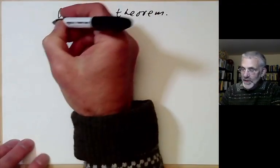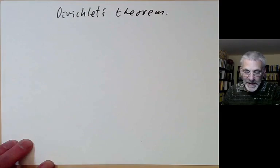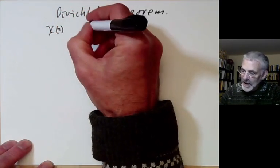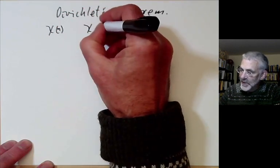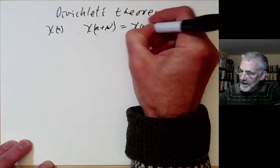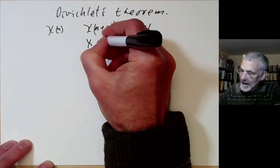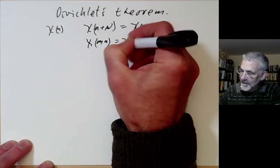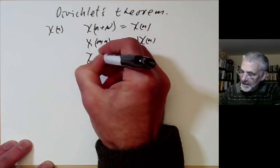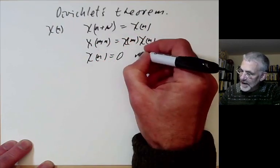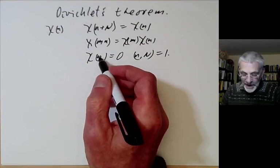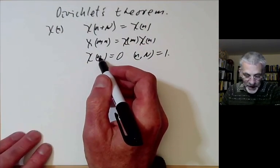I'll start by quickly recalling what we said last lecture about Dirichlet characters. The Dirichlet characters have period N, so chi(n + N) = chi(n), and chi(m × n) = chi(m) × chi(n), so it's multiplicative. And chi(n) is equal to zero if n and N are not co-prime, so we normally ignore its values whenever n and N are not co-prime.